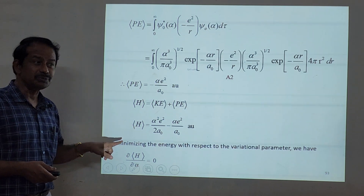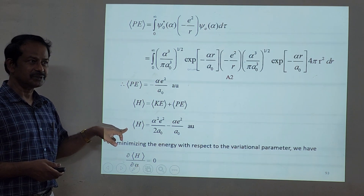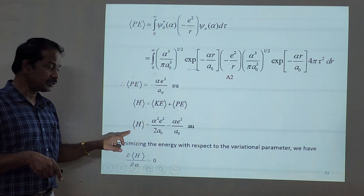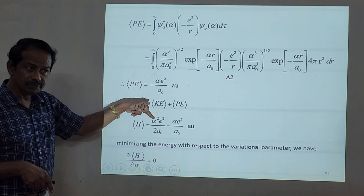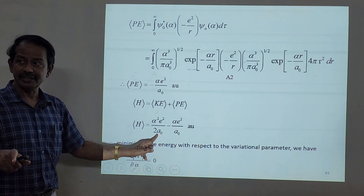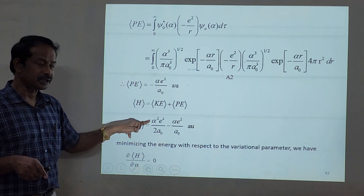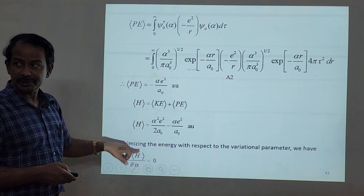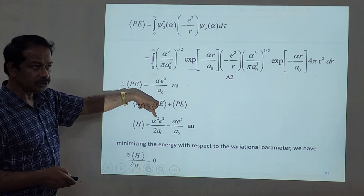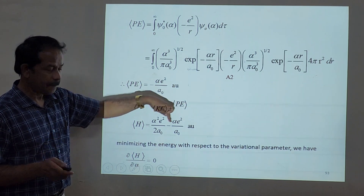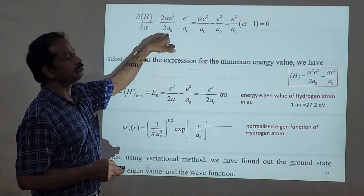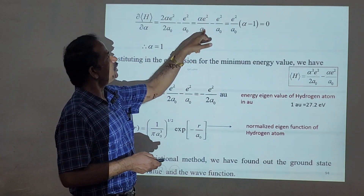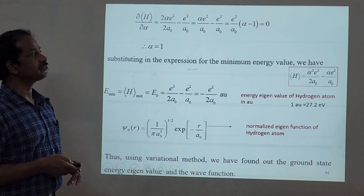The variation principle says we must minimize the energy with respect to the variational parameter α. Differentiating E with respect to α and setting it equal to zero: dE/dα = 2α·e²/(2a₀) - e²/a₀ = 0. The twos cancel, giving (e²/a₀)(α - 1) = 0, so α = 1.